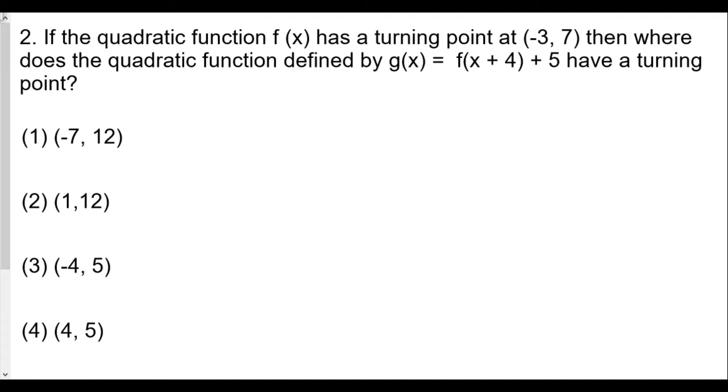If the quadratic function f(x) has a turning point at (-3, 7), then where does the quadratic function defined by g(x) = f(x + 4) + 5 have a turning point?